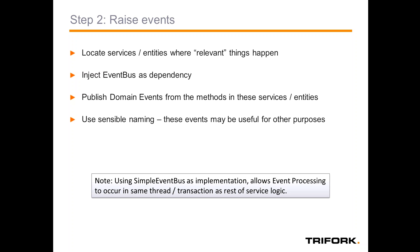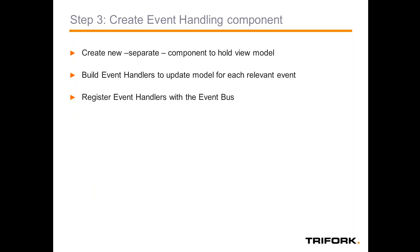The way to do that is to inject the event bus as a dependency into those modules and then publish domain events from the methods where the relevant things happen. In these events, make sure that you use sensible naming, because these events might be useful now to build up the new view, but in the future we'll use them for new views or to update other components as well. From a domain-driven design perspective, these names have to make sense — they have to have a business meaning. Once we have the events and the model, we can start creating an event-handling component that handles the published events and updates the query model accordingly.